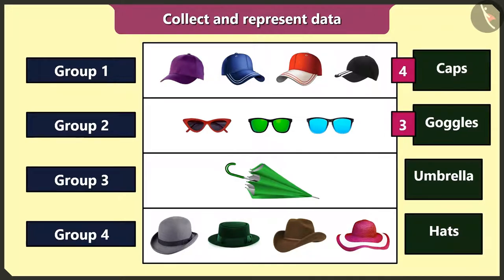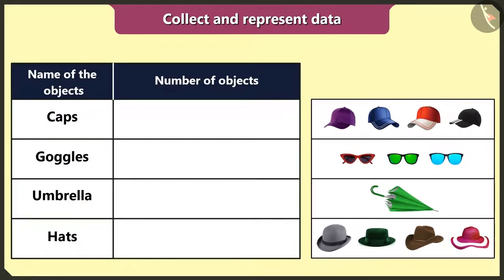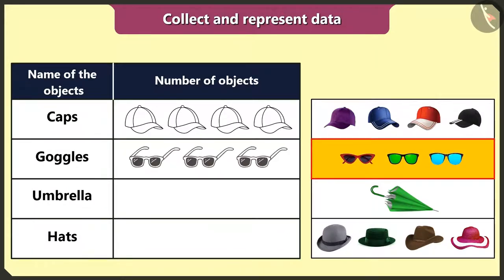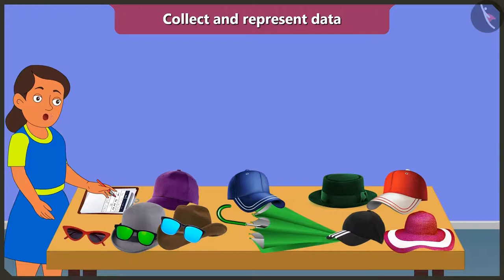Now I will count the objects in each group. I have four caps, three goggles, one umbrella, and four hats. Now I will create a table and represent all the data in it. There are four caps, so I will draw four caps. There are three goggles, so I will draw three goggles. Then there is one umbrella, so I will draw a picture of an umbrella. And there are four hats, so I will draw four hats. Oh wow, it looks good!